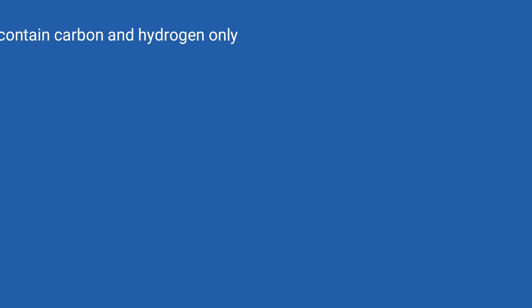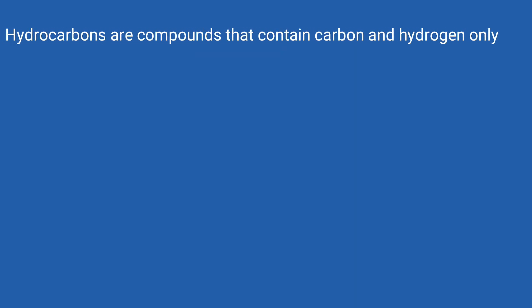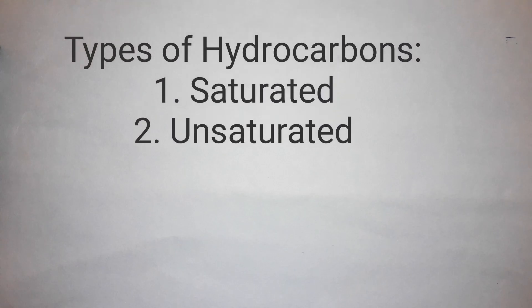In this lesson, you are supposed to know hydrocarbons. A hydrocarbon is a group of compounds that contains carbon and hydrogen only. Mainly, we have two types of hydrocarbons: saturated and unsaturated hydrocarbons.